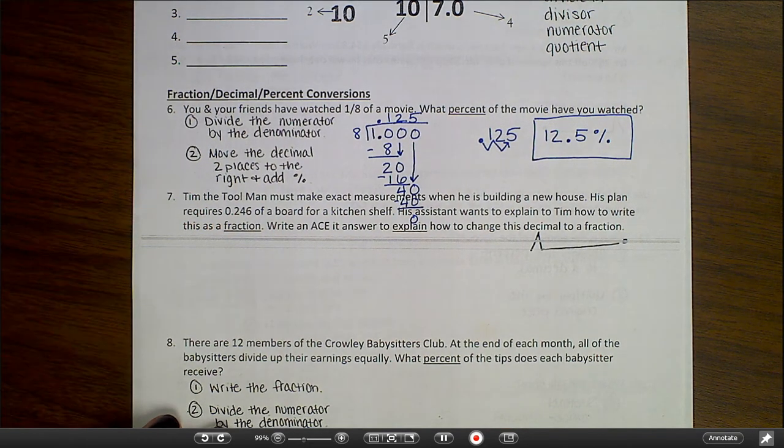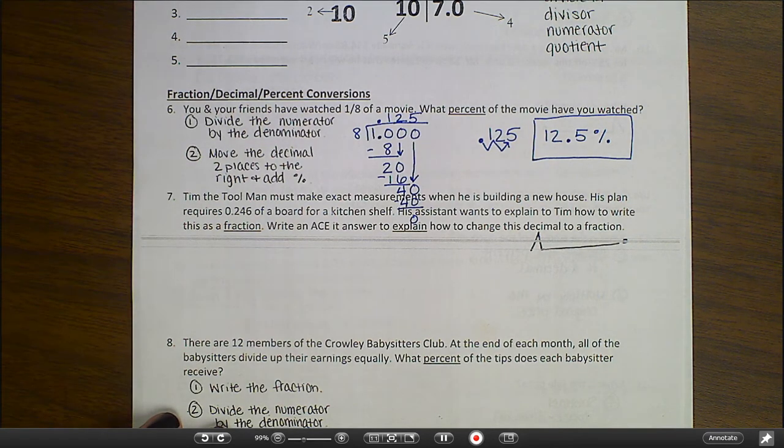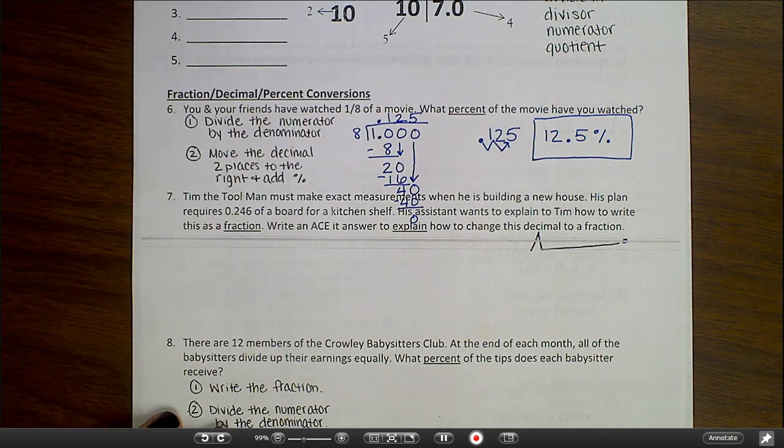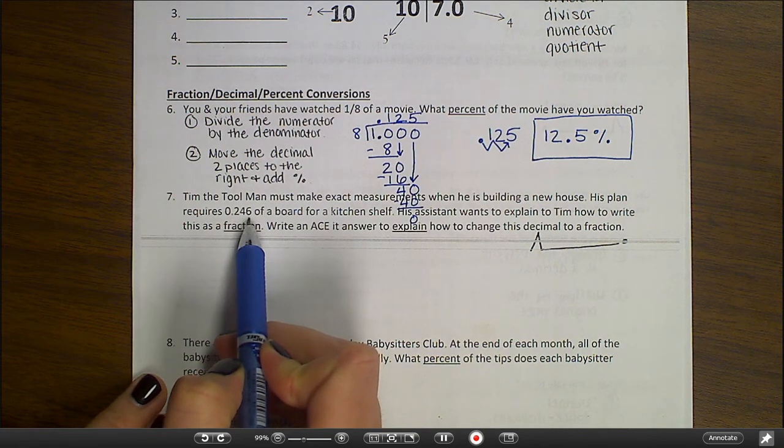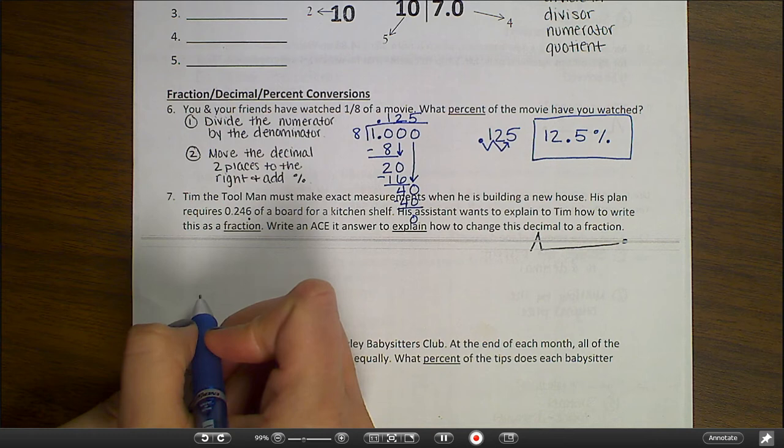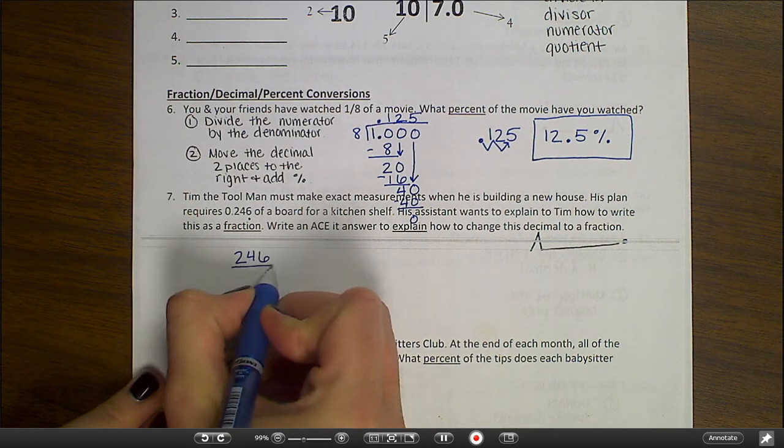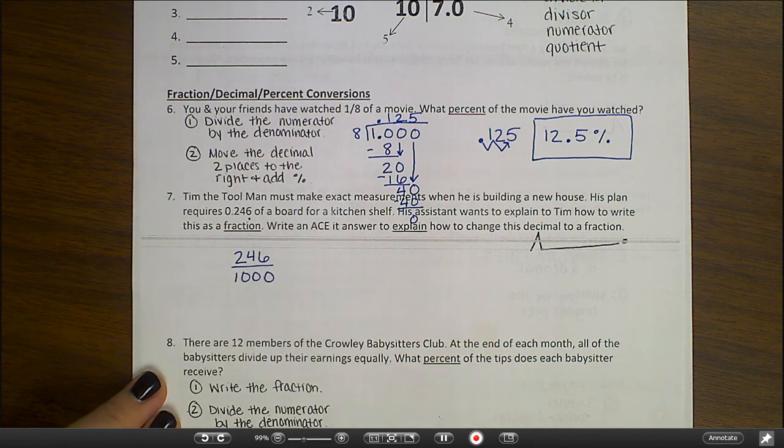Number 7. Tim the tool man must make exact measurements when he is building a new house. His plan requires 0.246 of a board for a kitchen shelf. His assistant wants to explain to Tim how to write this as a fraction. Write an ACID answer to explain how to change this decimal to a fraction. So on your test, you're not going to actually have to work out a problem like this, but you will need to be able to choose an answer that explains it fully. The way that I would explain this to Tim would be to let him know that he needs to first say it. 0.246 is really two hundred forty-six thousandths. So first, I would say it. Second, I would write it.